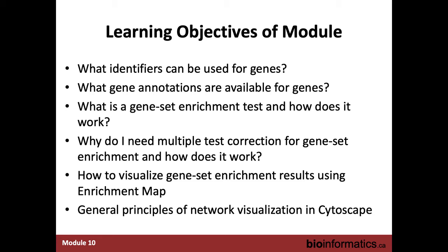Then: what is a basic gene enrichment test and how does it work? To conceptually understand what we're doing in the context of pathway enrichment analysis, you can use many different tools to run these types of tests. Then, why do we need to use multiple testing correction? We always need to use multiple testing correction because we're dealing with big data. How do we analyze gene set enrichment results using enrichment map? We do that because these results are often very redundant, and many similar ideas need to be clustered together.